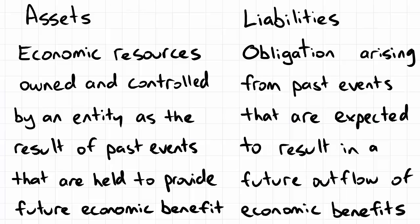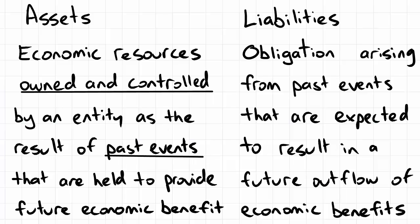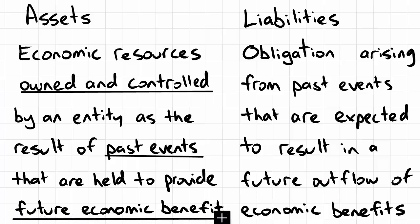Under assets, we've got economic resources that are owned and controlled by an entity — this will be our first key characteristic. As the result of past events will be number two. And it is held in order to provide a future economic benefit — that'll be number three.